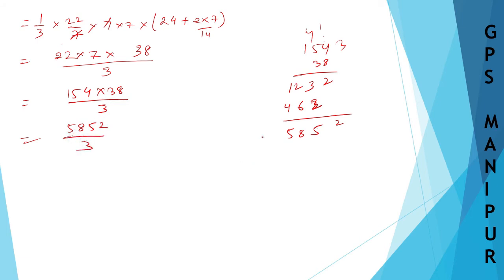If I divide by 3... [performs division]... which will be 1950 remainder 2. Let me write it in mixed number form: 1950 and 2/3 centimeter cube.